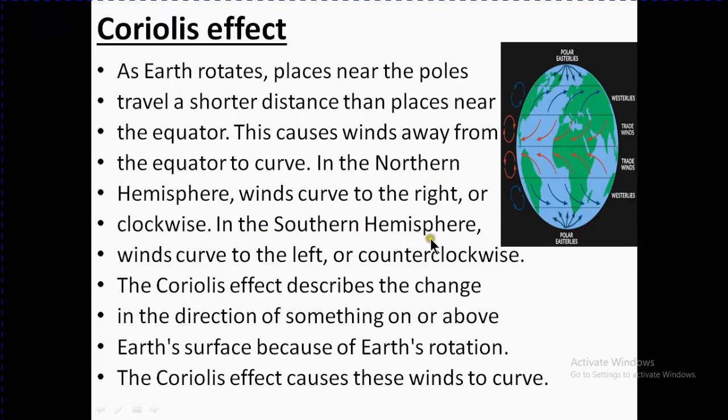You can see here clockwise and anticlockwise. In the southern hemisphere, winds curve to the left, or counterclockwise. The Coriolis effect describes the change in direction of something on or above Earth's surface because of Earth's rotation. The Coriolis effect causes these winds to curve instead of moving straight.